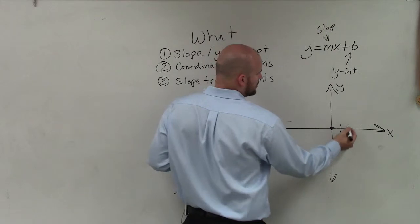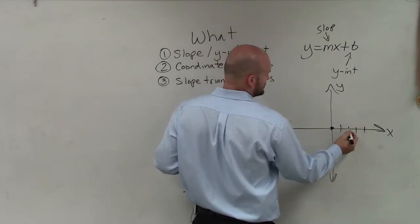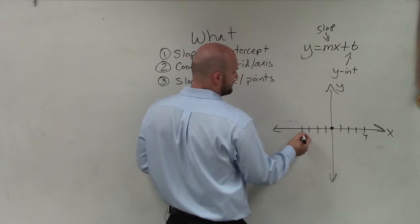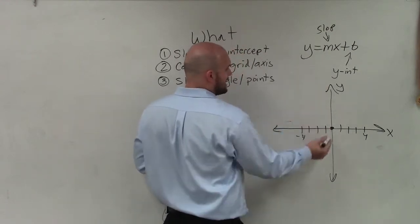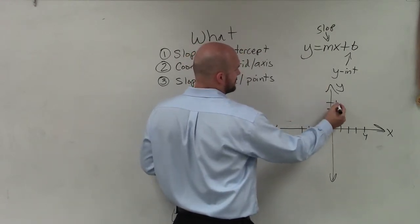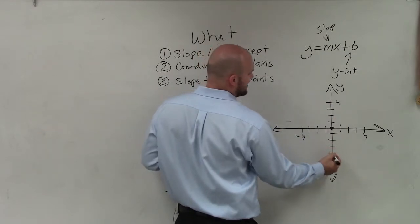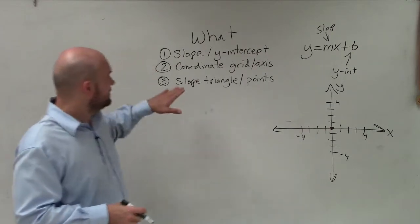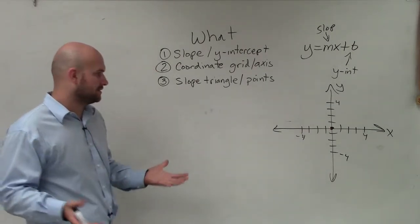To the right is positive: 1, 2, 3, 4. To the left is negative. On the y-axis, up is positive and down is negative. This will be very important when we're graphing our points. The next thing is understanding what the slope triangle is.